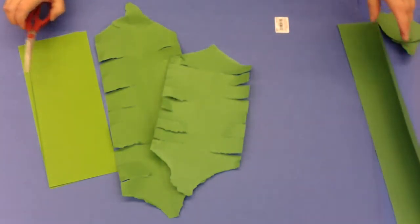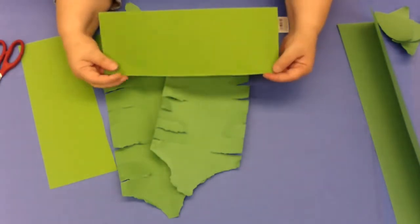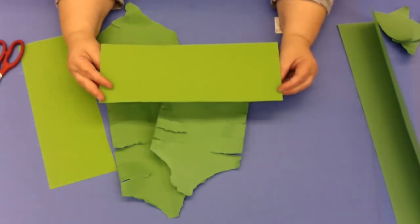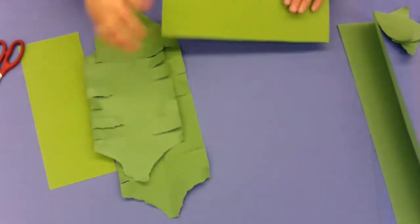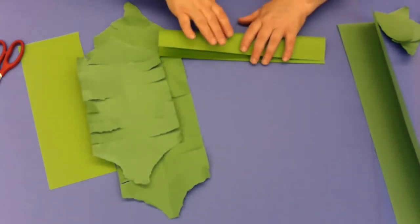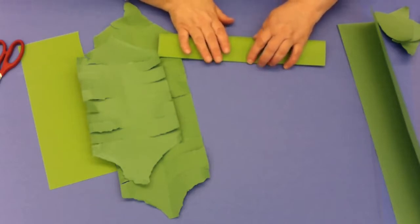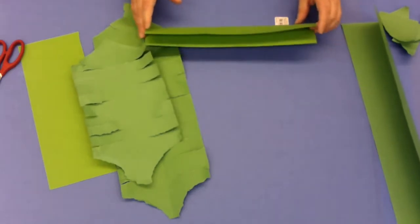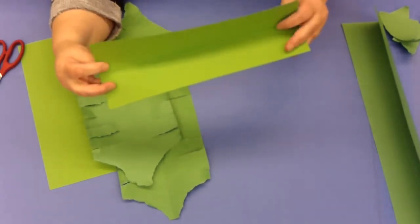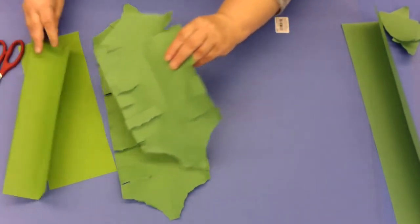If you don't have the 12 by 18, you can just use standard sized construction paper and kiddos probably can do this fold, although if you want to do it for them you absolutely may. The hot dog fold makes it super long and skinny like a hot dog and that's going to be the middle part of our leaves.